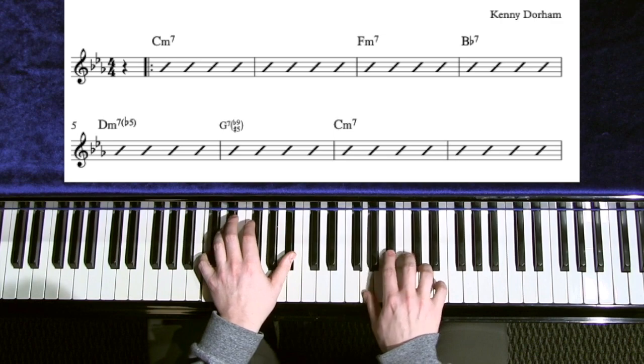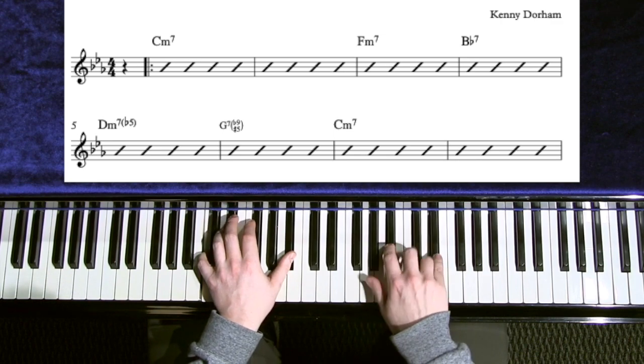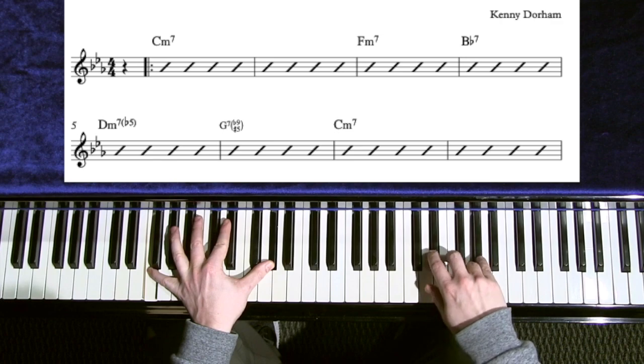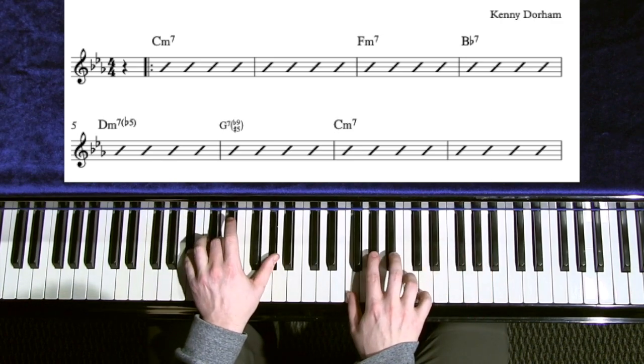So, here's my C minor. Here's my F minor now. 5, 7, 9, 3. B flat 7. 5, 7, 9, 3.